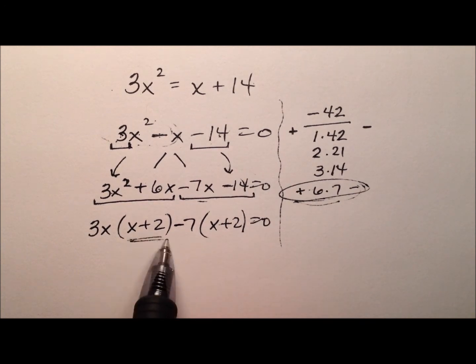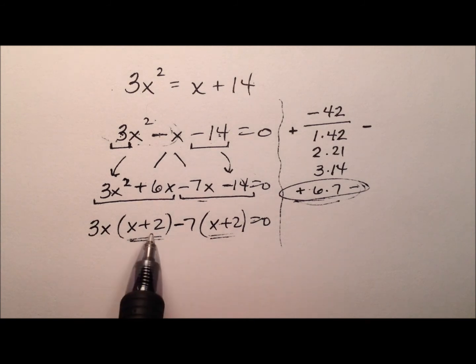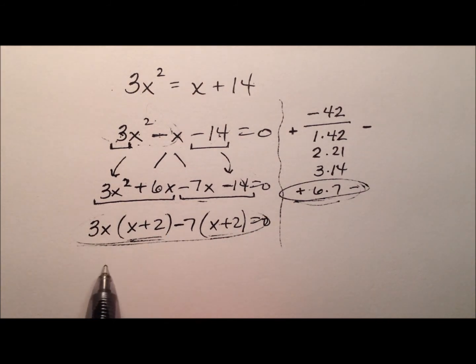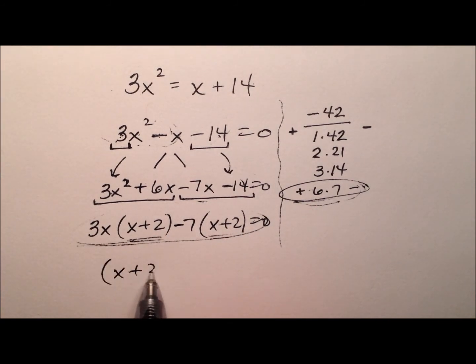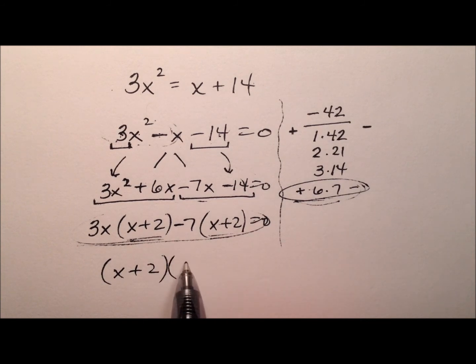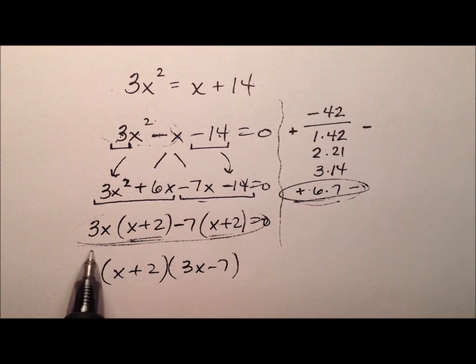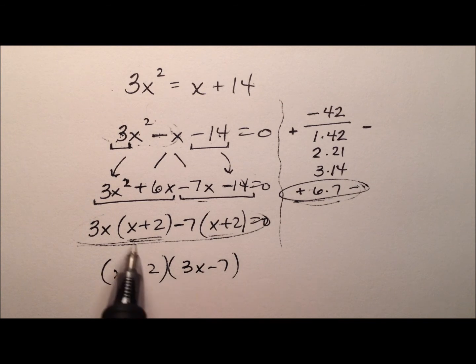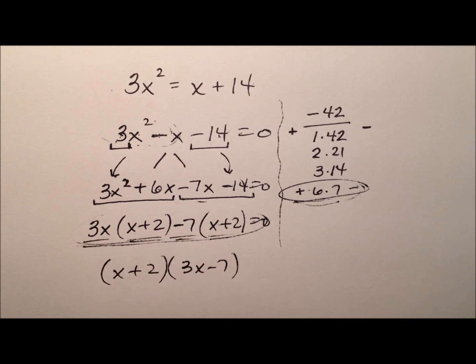That's really good because the leftovers here, the x plus 2s, they're the same. So I'm going to go ahead and factor those out. I have one quantity that's x plus 2 and the other quantity is the leftovers after I take the x plus 2s out and that's the 3x minus 7. And that equals zero.